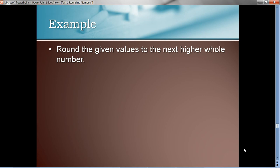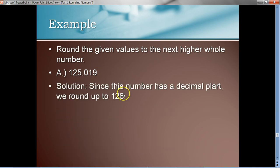So, let's try an example of this now. Round the given values to the next higher whole number. All right. The first number is 125.019. So, notice here. There's a small decimal part here. So, to the round to the next whole number, what do we want to do? We want to add one and round that up to 126. So, you kind of wonder why you even want to do this rounding up business like that. Well, it ends up when we compute sample sizes. This is the convention we have to follow.